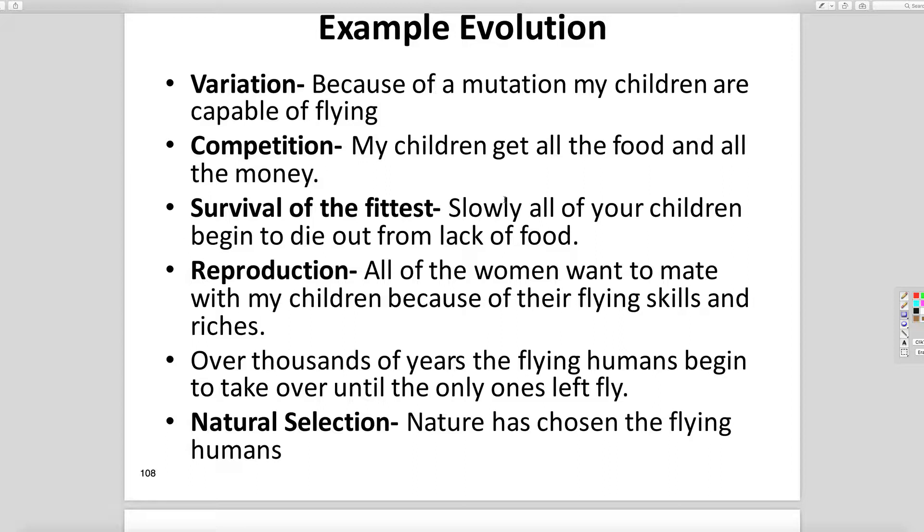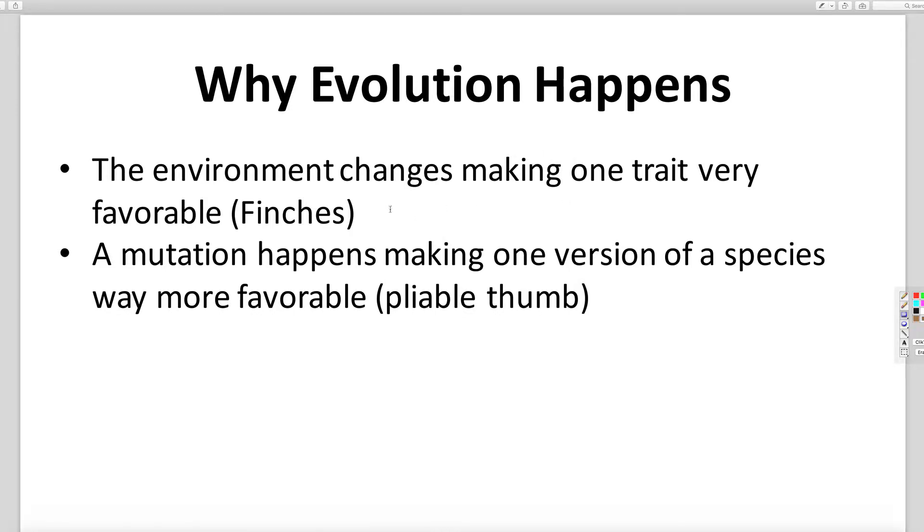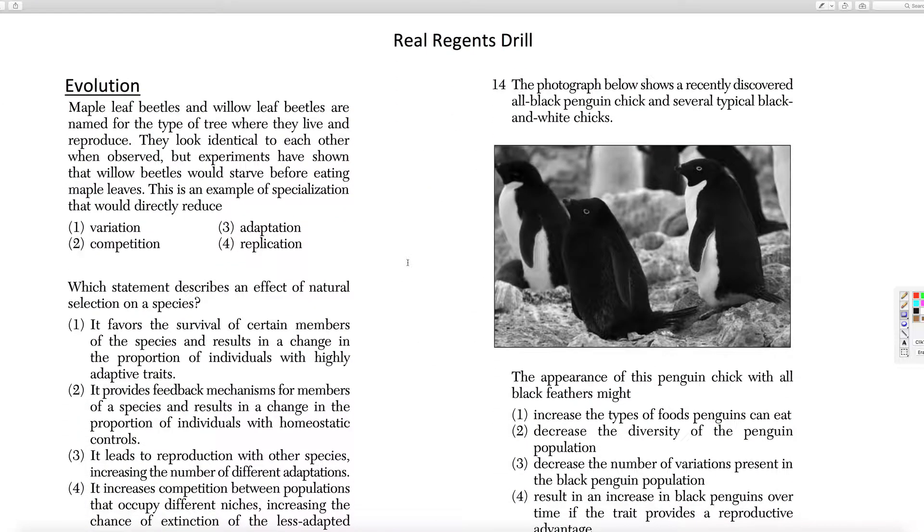So that trait would proliferate. Maybe now it's smart. People will gradually become smarter. Those are all different ways that it would work. So why does it happen? Because the environment changes or because a mutation happens. And it all starts with variation. The idea that there's a lot of different traits and that's what allows it to happen. So if we were all the same, then either we would all survive or all not survive. But because we're different, as the environment changes, some of us adapt better to fit the environment.